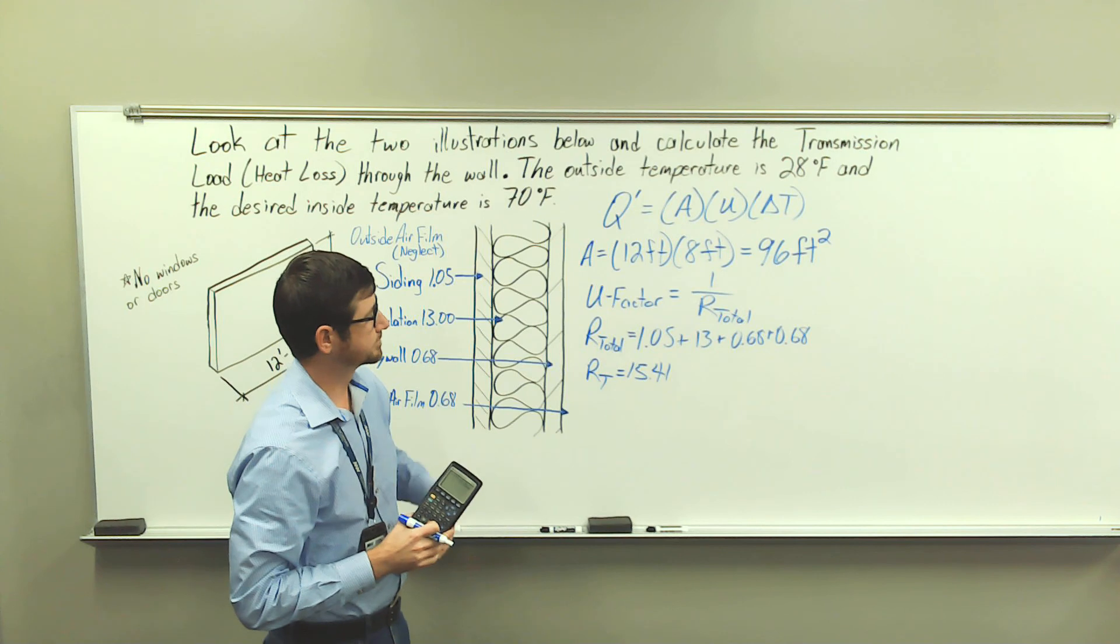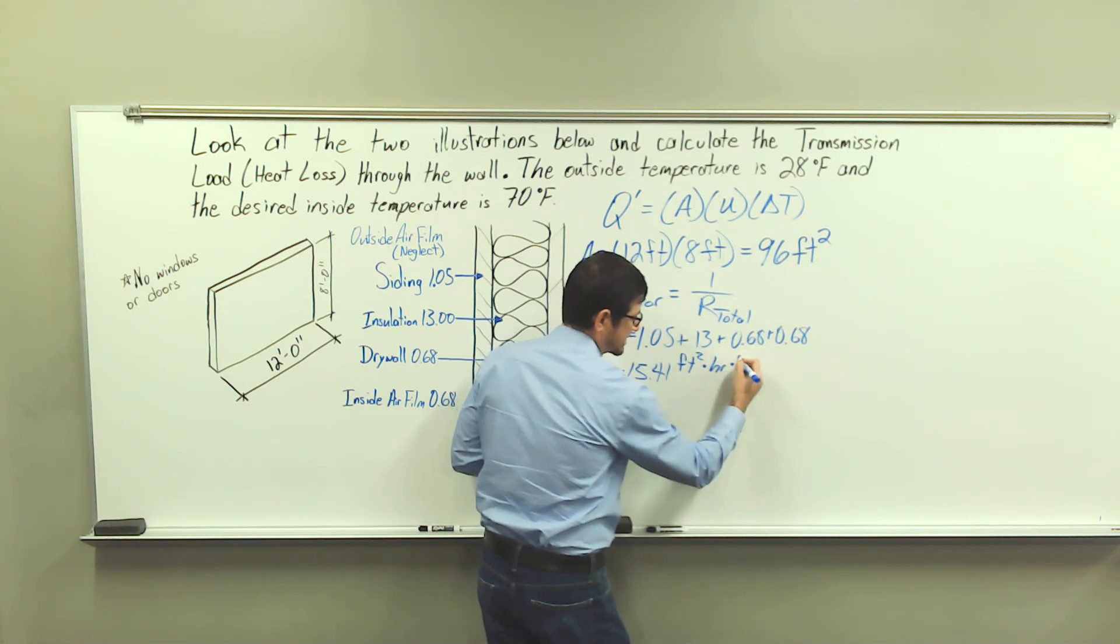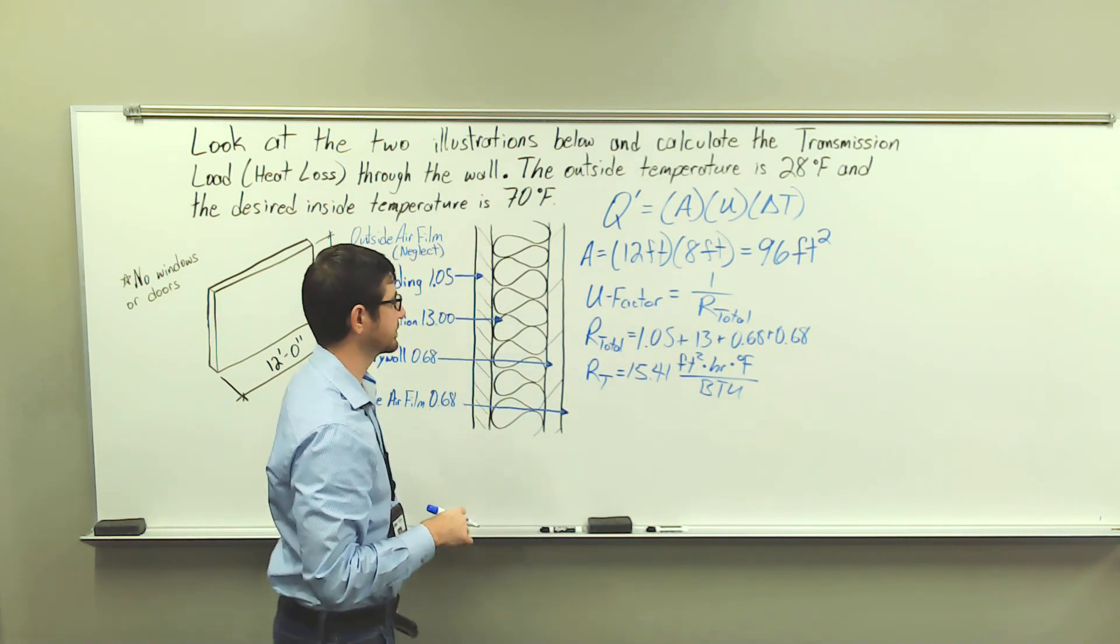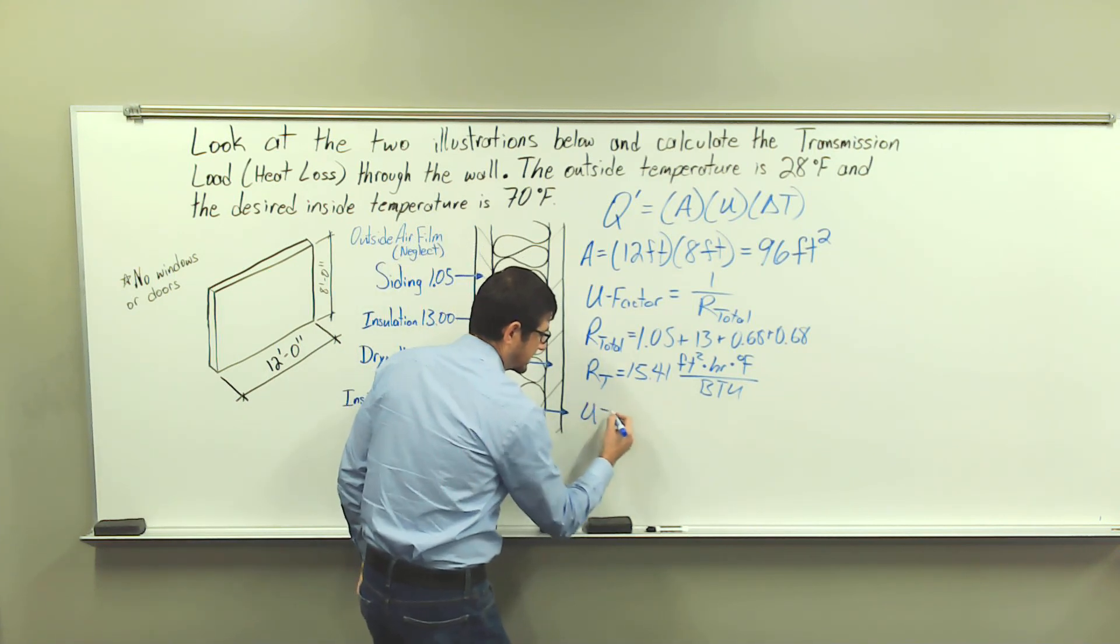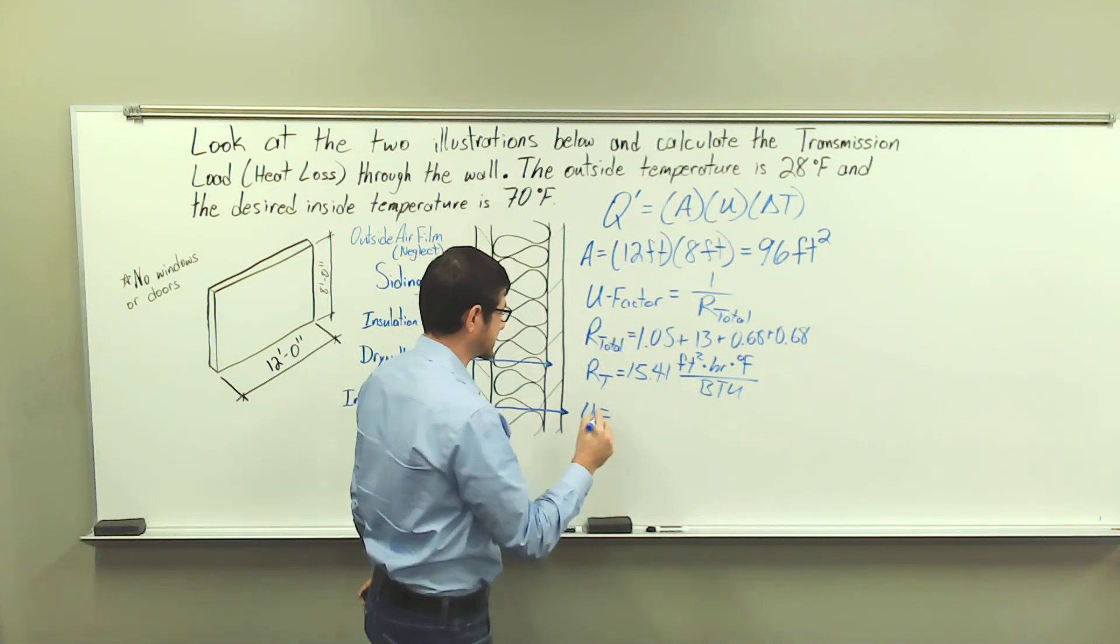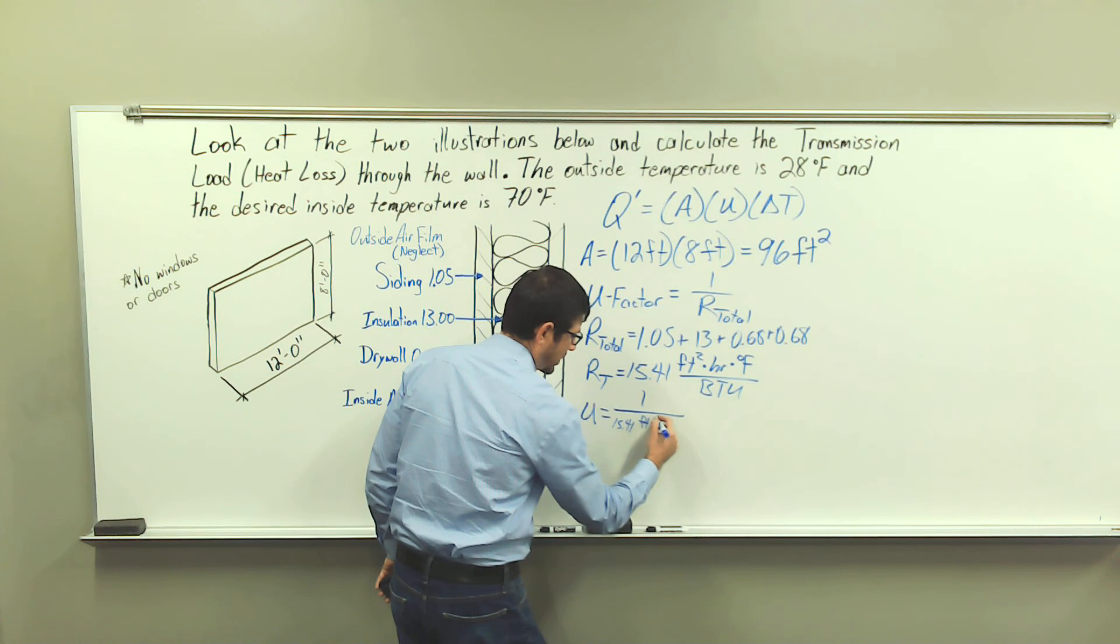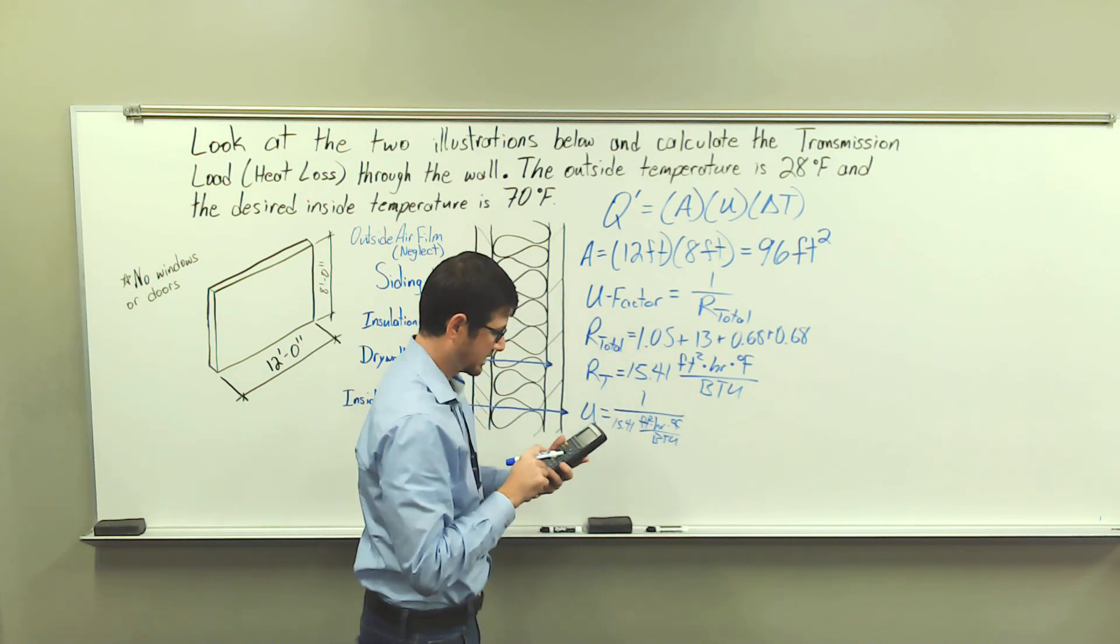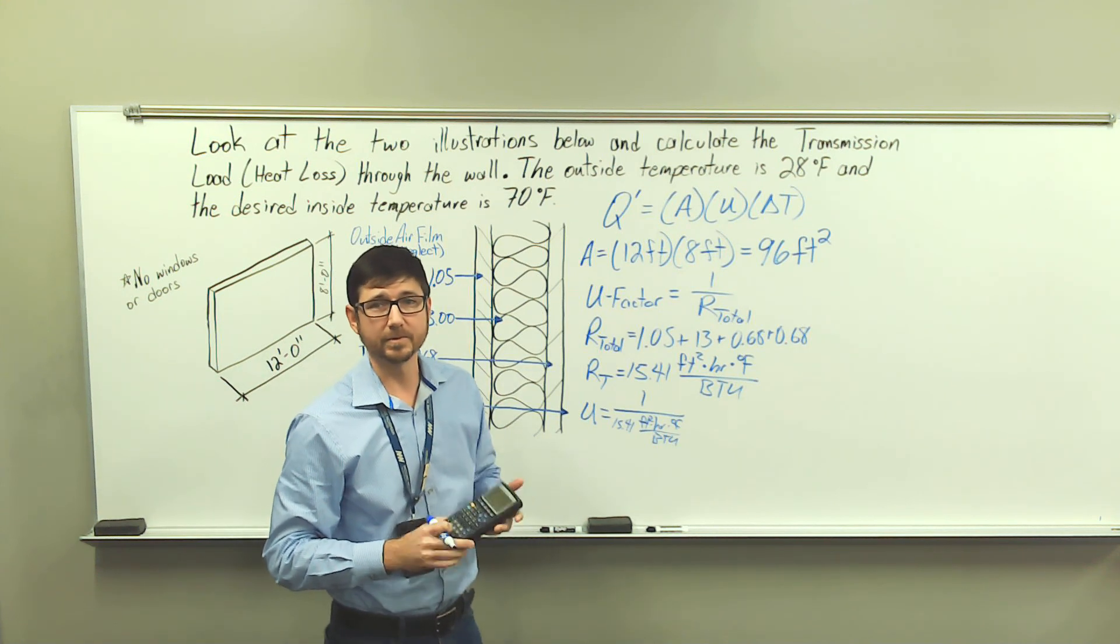Now the units on here, that's going to be foot squared times hour times degree Fahrenheit per BTU, or British thermal unit. So what we're going to do to calculate the U factor, this is going to be the inverse of our total R value. So 1 divided by 15.41. And what we're going to do, and I also listed in the notes, we are going to truncate at the thousandths place.